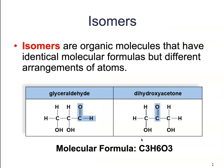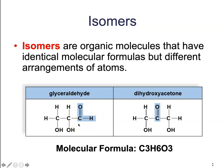One more thing I want to mention about hydrocarbons is the concept of isomers. In this figure, we have two organic molecules that have the exact same molecular formula — both have three carbons, six hydrogens, and three oxygens. However, they have drastically different chemical properties and reactivities. The carbon backbone is what allows for this diversity and complexity in organic molecules: they have the exact same molecular formula, but their shape is different.